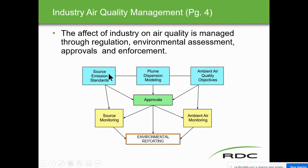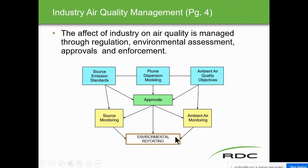Here we have source of emissions standards, plume dispersal modeling, and air quality objectives. We have to have ambient air quality — these are where analyzers are set away from the plants to measure the ambient air and see what's in it. Then you get source monitoring, ambient air monitoring, all your approvals by the government, and of course environmental reporting.